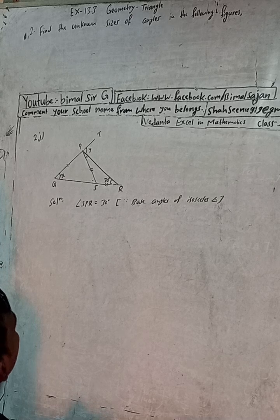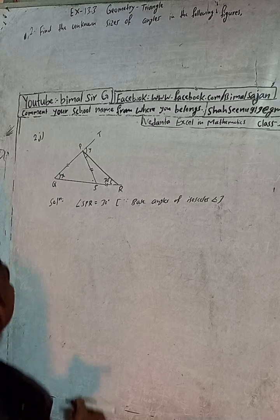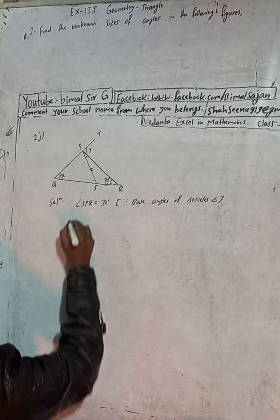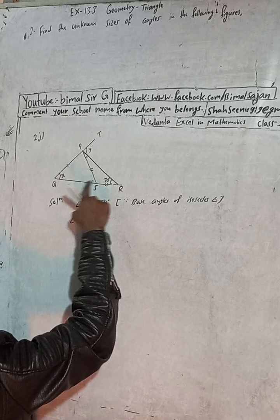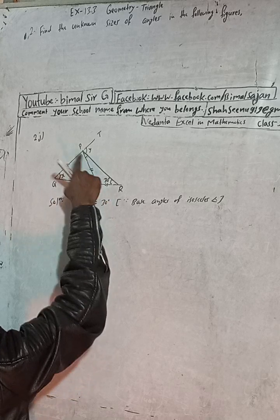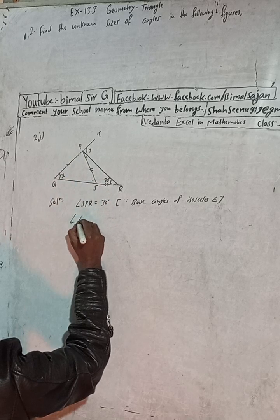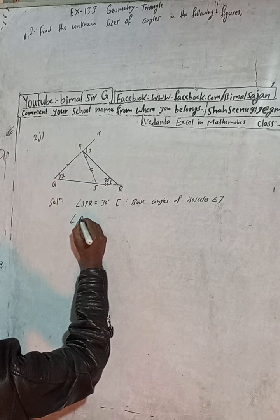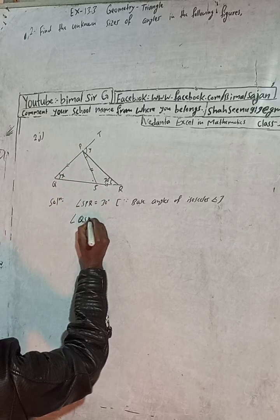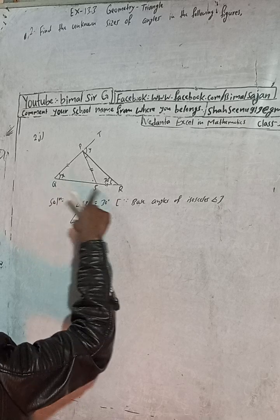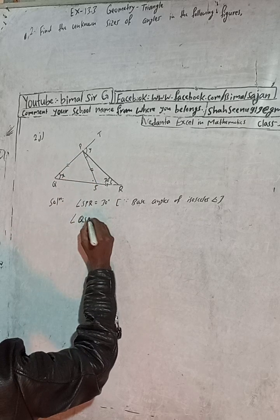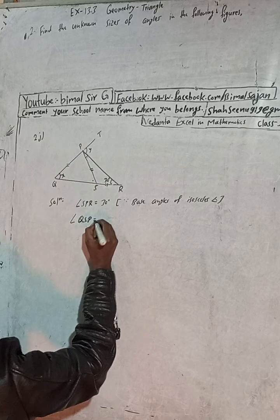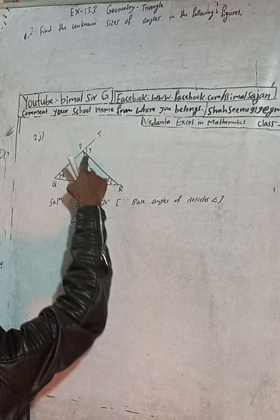So we have found this angle. Now we can write angle QSP. Angle QSP is equal to — let's find what this angle name is using the exterior angle theorem.